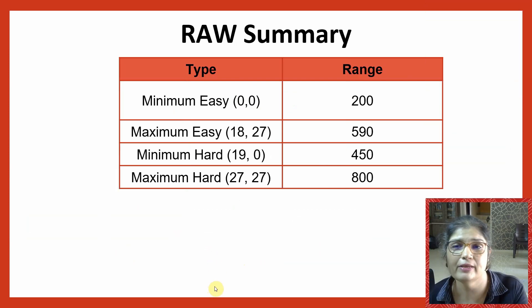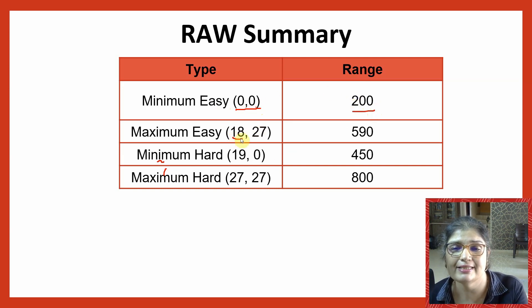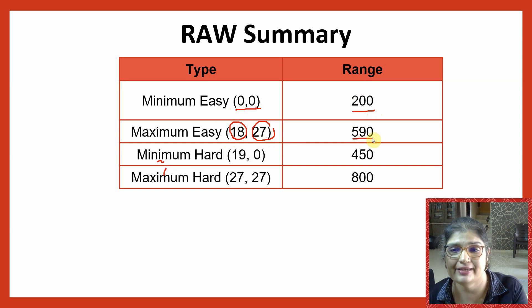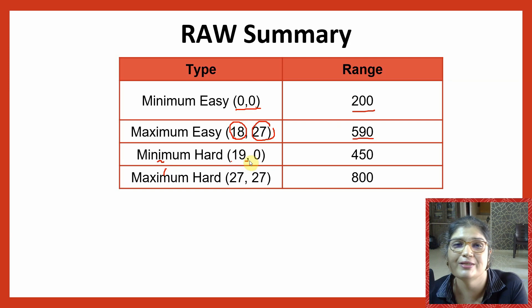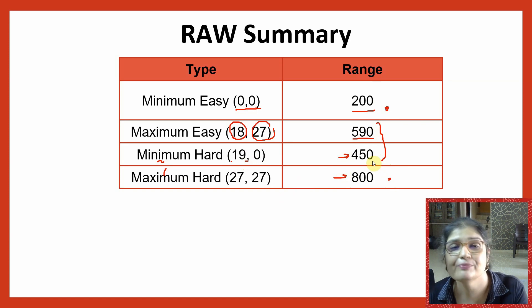This is your reading and writing scoring summary. The minimum you can get if you are on an easy module — zero correct in module one and zero correct in module two — is 200. The maximum with easy module two, getting 18 questions in module one and everything correct in module two, is 590. The minimum with hard module two — meaning you just get a hard section but don't get anything right after — is 450. And the maximum with hard module two is of course 800. These are things we have really found out through hard work and you can expect these to be correct.